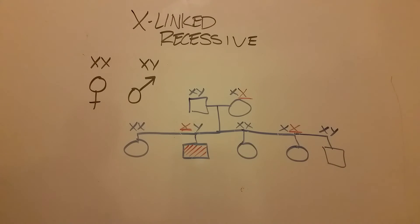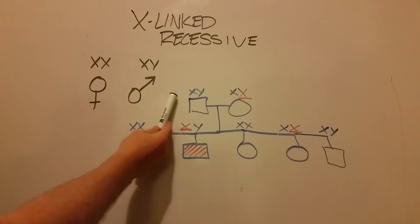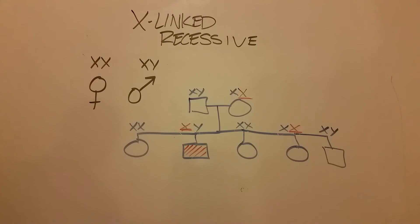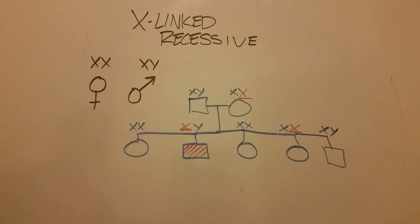That's X-linked recessive. It most often shows up on pedigrees in a recessive style, where it's not present at every generation, but it usually presents itself in males because they only have one copy of the X. Thus, the recessiveness of this X-linked trait can manifest without being canceled out by a dominant or wild-type X.